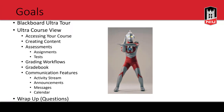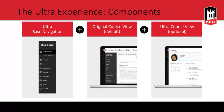Today we are going to be talking all about Ultra. So starting out, most of you have probably seen the Ultra base navigation — that's this thing on the side. Everybody hits that when you log on. Just because you see this doesn't necessarily mean you're in Ultra. Ultra refers to the course view. Right now we have two different course views: the original and the new Ultra. The original has been around for 10 plus years, and now we're phasing into Ultra.